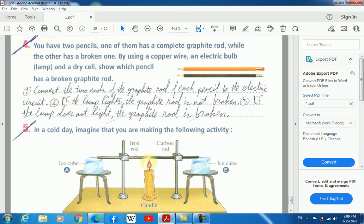You have two pencils. One of them has a complete graphite rod, while the other has a broken one. By using a copper wire, an electric bulb or lamp, and a dry cell, show which pencil has broken graphite rods. We have to connect the two ends of the graphite rod of each pencil to the electric circuit. If the lamp lights, the graphite rod is not broken. This means the rod inside the pencil is continuous. If the lamp does not light, this means the graphite rod itself from inside is broken.